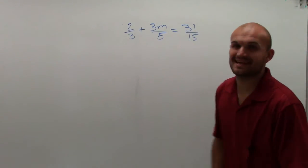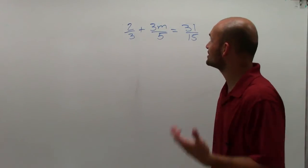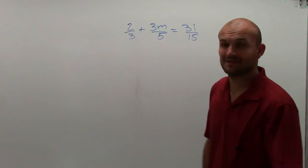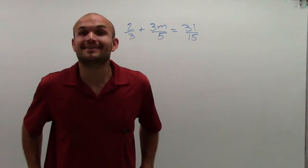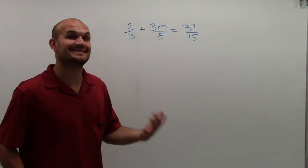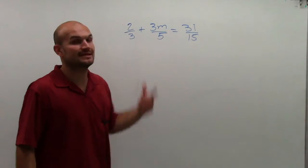Welcome. What I want to do today is show you how to solve 2/3 + 3m/5 = 31/15. You can see we're dealing with some fractions, a lot of different fractions. And the important thing to notice is they all have different denominators.